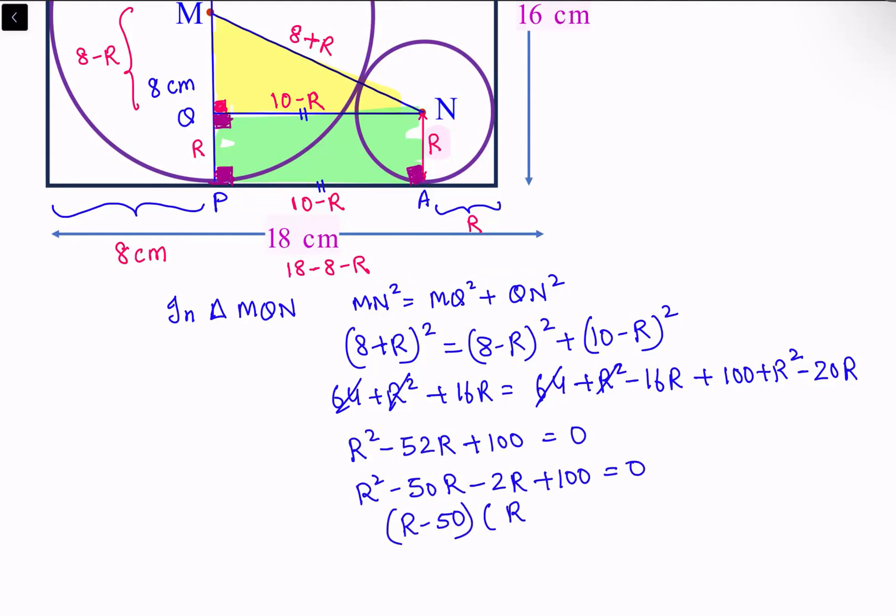Factoring: R² - 50R - 2R + 100 = 0, so (R - 50)(R - 2) = 0. Either R equals 50 centimeters or R equals 2 centimeters. R cannot be greater than 18 centimeters, so R = 50 is wrong. The correct answer is R = 2 centimeters, and this is our answer.